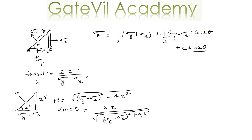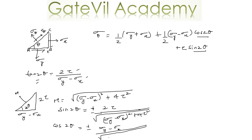When the two angles differ by 180 degrees, sin gives us two values — one positive and one negative. So sin 2θ = 2τ divided by √[(sigma y − sigma x)² + 4τ²]. Similarly, cos 2θ = ±(sigma y − sigma x) divided by √[(sigma y − sigma x)² + 4τ²]. These are the expressions for sin 2θ and cos 2θ.